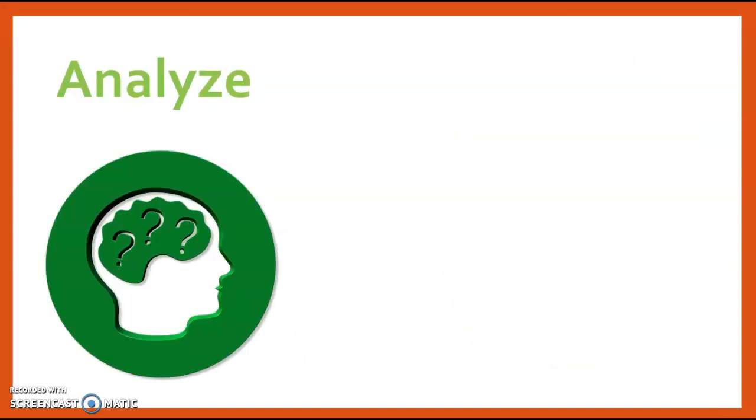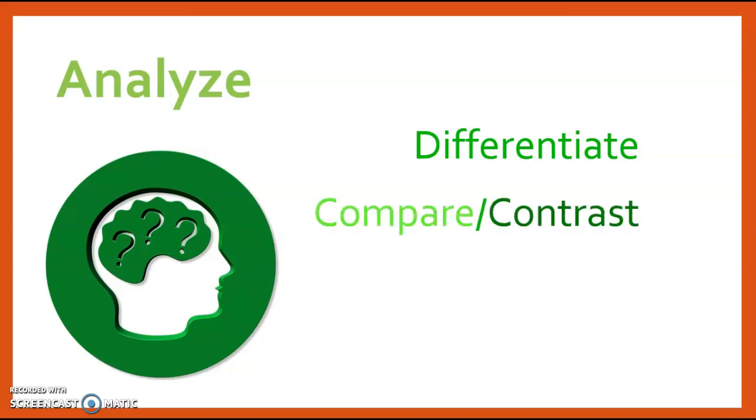When you reach a point where you can analyze things, you're able to differentiate between things. You can tell that not everything is the same, which means that you can compare and contrast. So you're able to look at what is the same about certain things and what is different about them.